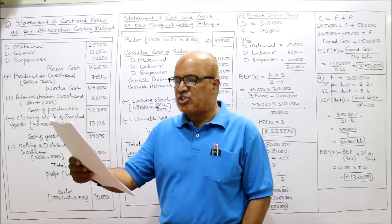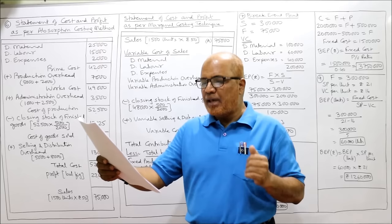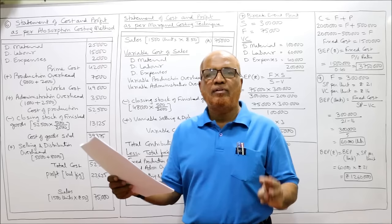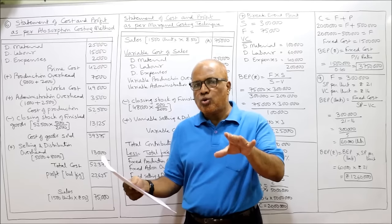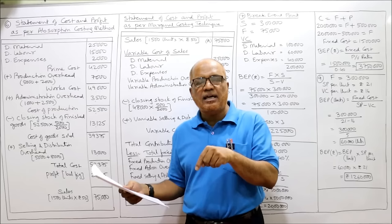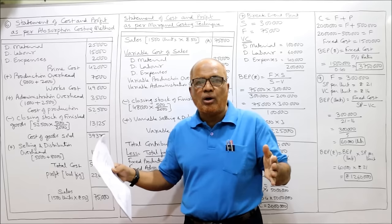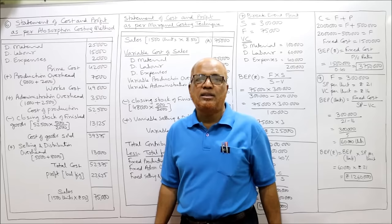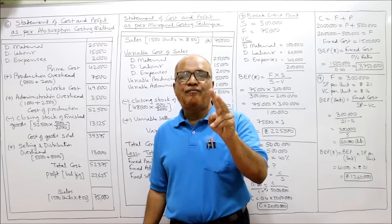Out of 2,000 units produced, 500 units are in closing stock, so 1,500 units are sold. The profit will differ under the two methods because of how closing stock is valued. Under absorption costing, closing stock is valued at total cost (fixed + variable). Under marginal costing, closing stock is valued at variable cost only.